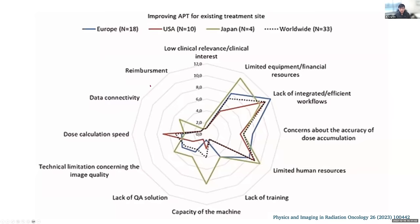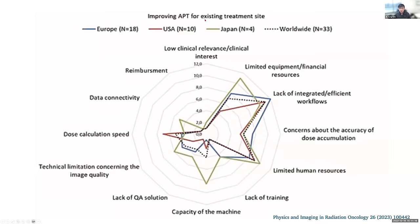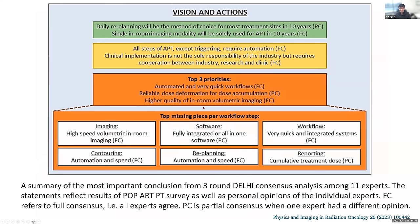The most important graph shows what the 68 responders think is most important to improve ART for existing treatment sites. The top concern is integration and workflow, followed by limited human resources and concerns about accuracy of dose accumulation. For new treatment sites, the top barriers are almost the same — lack of integration and human resources. Data connectivity and dose calculation speed are not considered major hurdles.